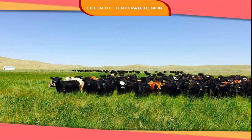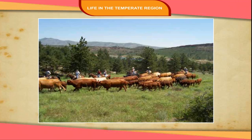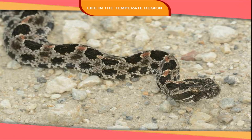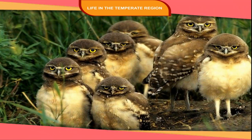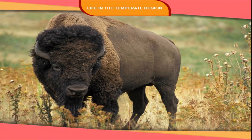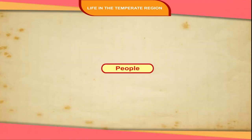Cattle rearing is common and large cattle farms called ranches are places where cattle are reared and looked after by farmhands who move from place to place mounted on horseback. Wildlife is quite rich, with animals like rabbits, coyotes, rattlesnakes, hawks and larks found here. Insects like flies and grasshoppers are quite abundant. Some animals like American bisons have been greatly reduced due to indiscriminate hunting and have now become a protected species.